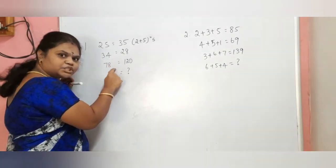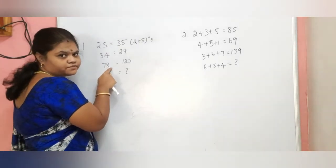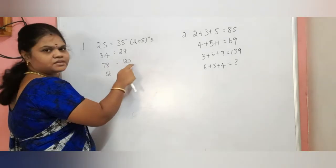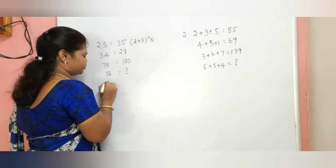Here is 7 plus 8 equals 15, 15 into 8 equals 120. So, this is the logic. We will do this.